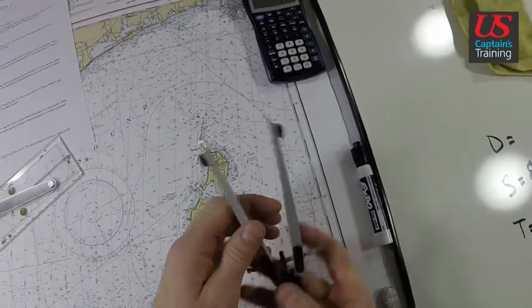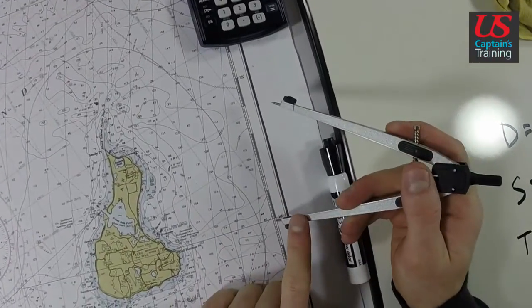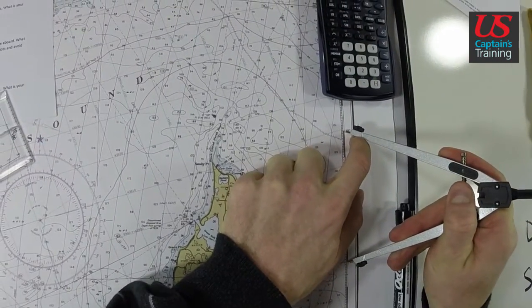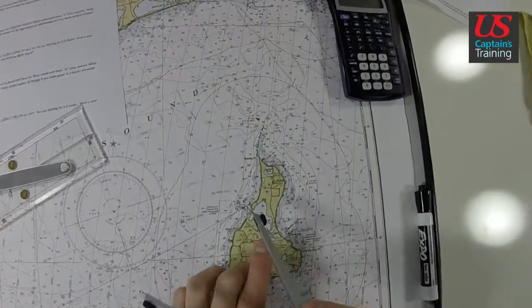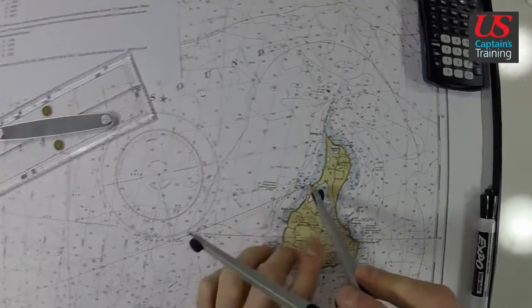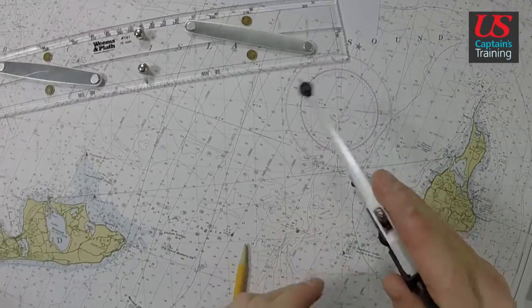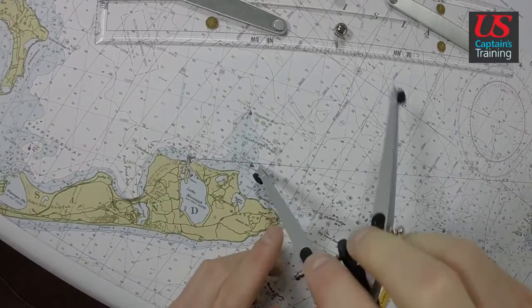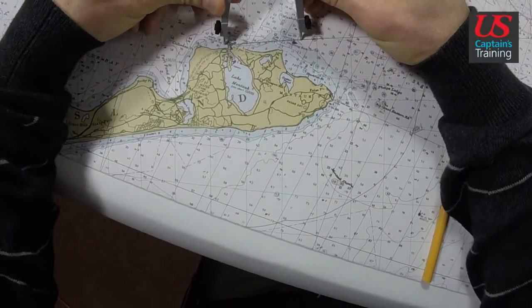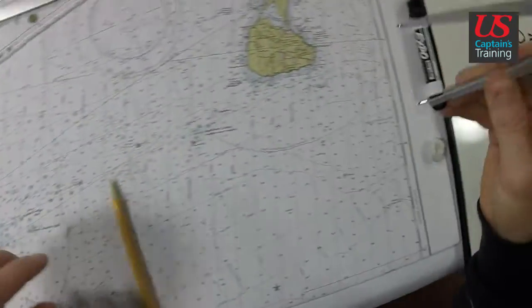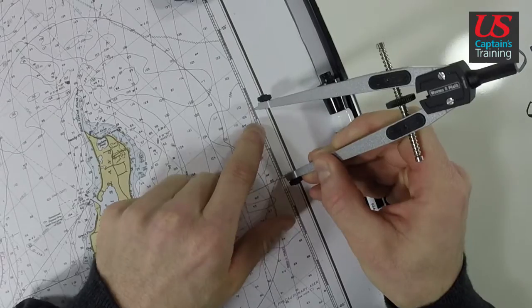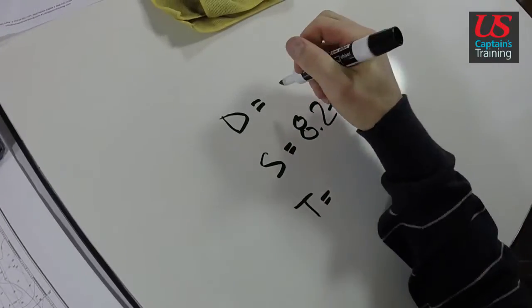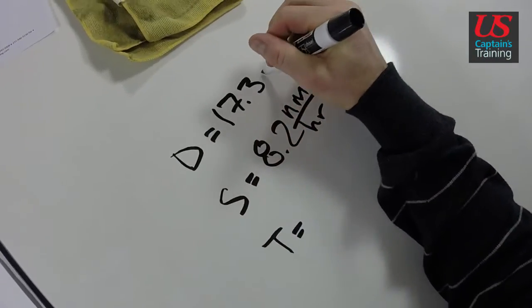Take my dividers, get five nautical miles off of the latitude scale - always use the latitude scale - and go from buoy 5 at Great Salt Pond down the line: five, ten, fifteen, plus what's left over. Fifteen, sixteen, seventeen point three is our distance. Our distance is 17.3 nautical miles.